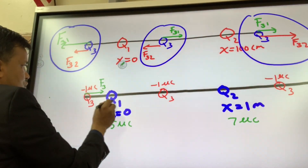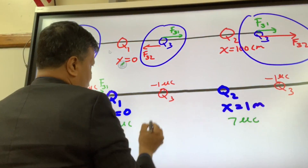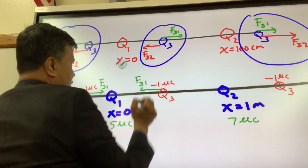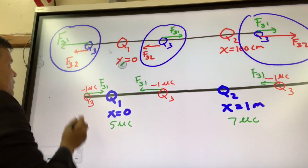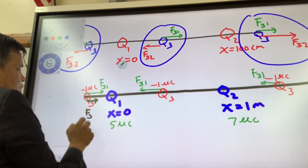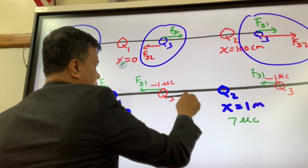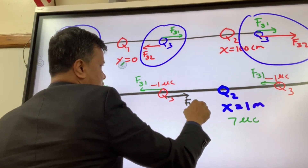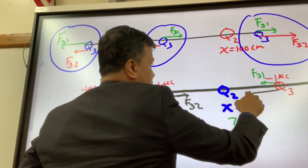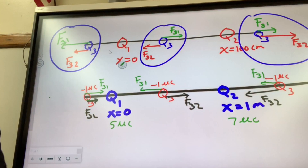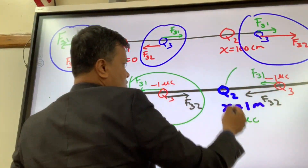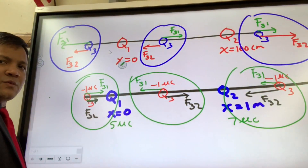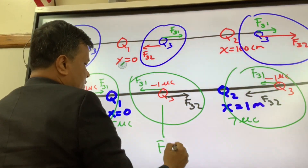The force on q3 due to q1 and the force on q3 due to q2 are drawn for each position. As you can see: this position has some net force because the green vector is longer than the dark one; this position has zero net force because the green and dark vectors are equal in magnitude and opposite in direction; and this position has some net force because the dark vector is longer than the green one. So this one will experience zero net force.